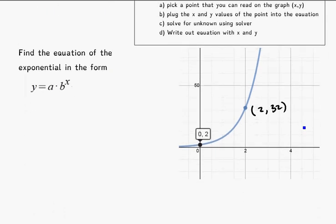Okay. First example, find the equation of the exponential in the form y equals a times b to the power of x. Looking for anything that I know, I see a point (2, 32). Remember it's x, y. And I see another point here, which happens to be my y-intercept. So I know a equals 2. It's starting at a height of 2. I don't know anything about b.